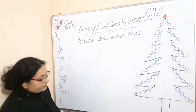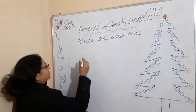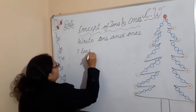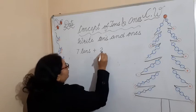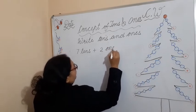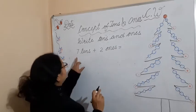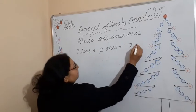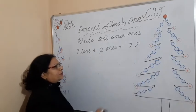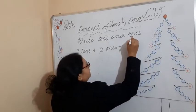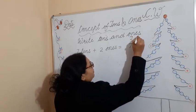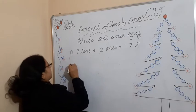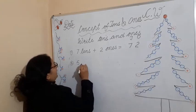Now I'll explain another way. For example: seven tens plus two ones is equal to — seven tens means you write seven under T, and two ones means you write two under O — that gives you seventy-two. T stands for tens and O stands for ones.